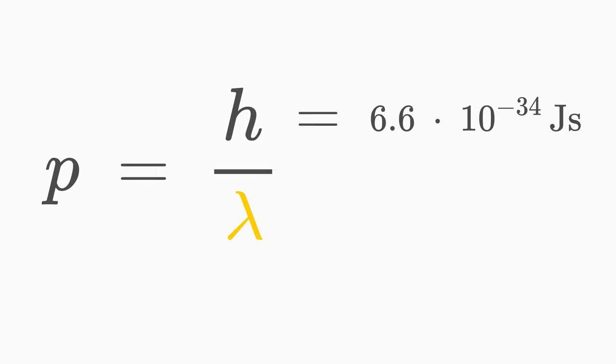A photon of wavelength lambda has the momentum h over lambda. Here h is the Planck's constant, a physical constant with the value 6.6 times 10 to the minus 34 joule seconds, and lambda is the wavelength of light.